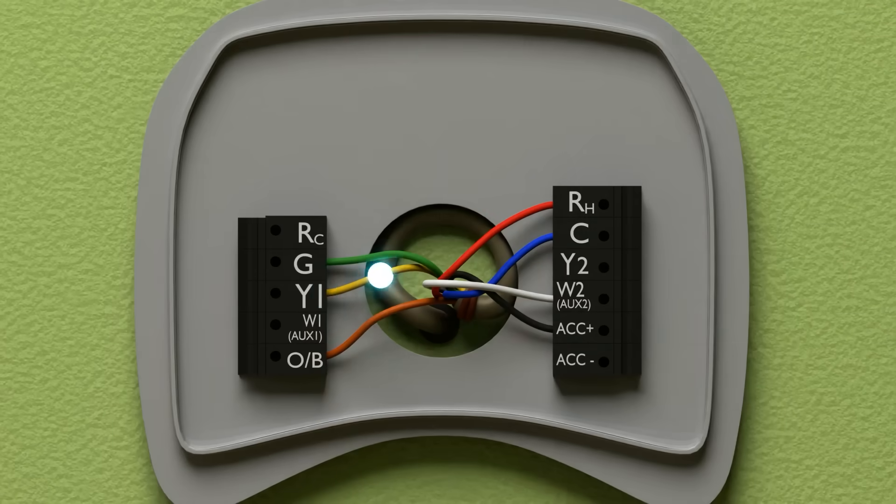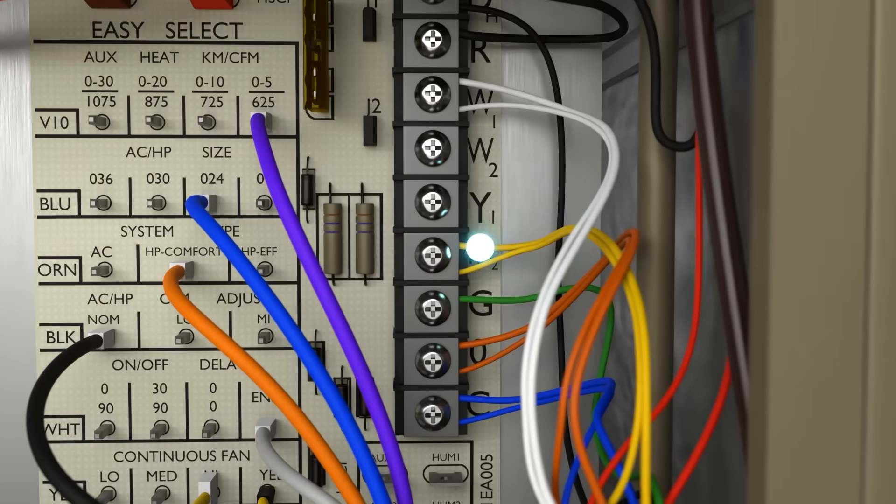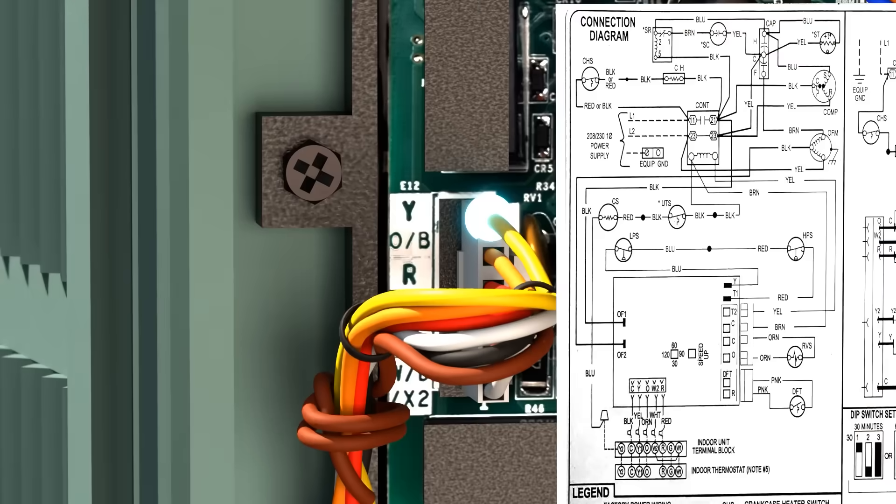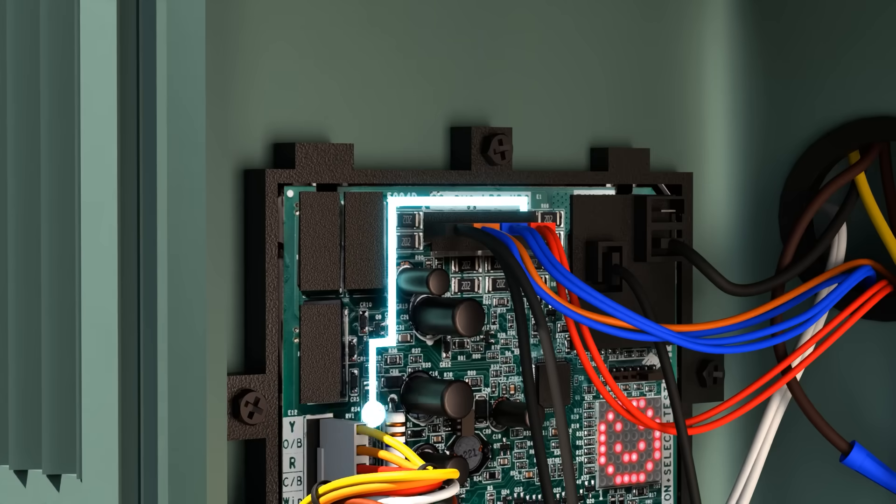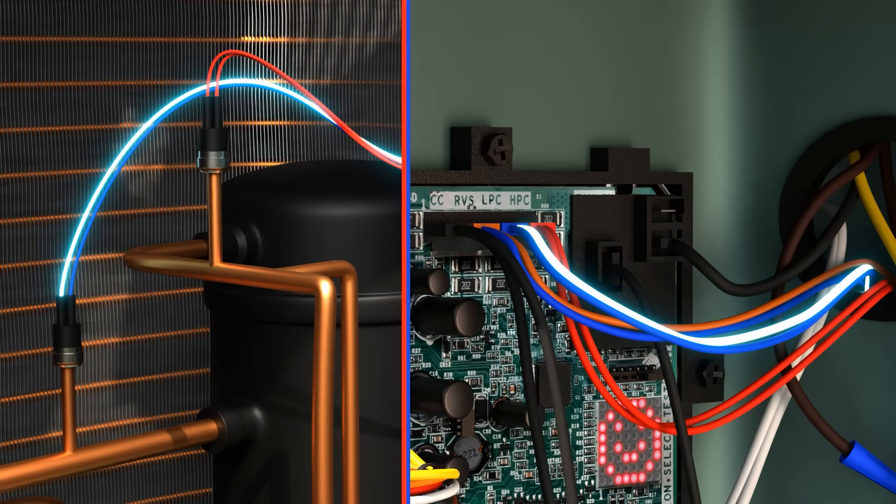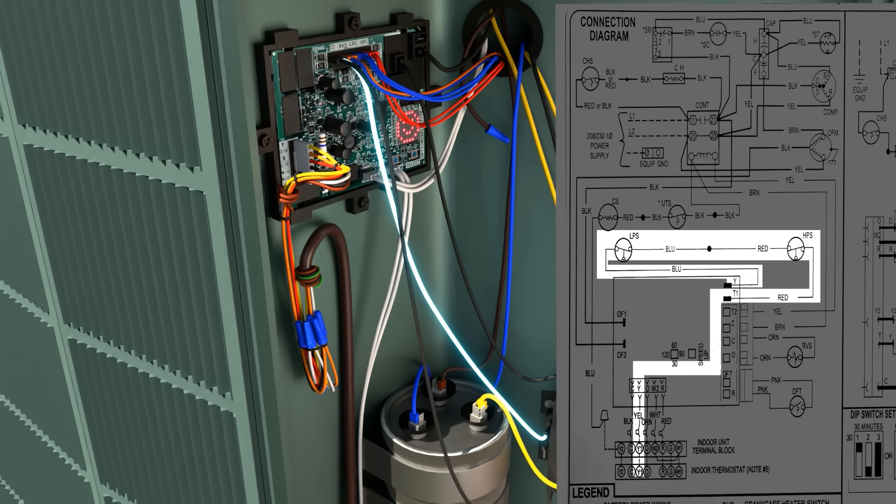The Y circuit goes into the terminal block, which acts as a junction point, and then goes out to bring on the contactor. Y or yellow is used to energize the contactor coil, which pulls the contactor in and allows the condenser fan and the compressor to run. Here we show the Y circuit going in and out of our high pressure switch and low pressure switches before it goes to our contactor coil, as shown in the diagram. If either of these switches open, it won't allow the system to run.